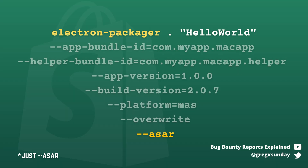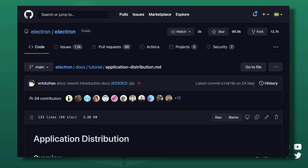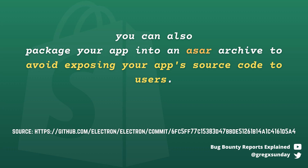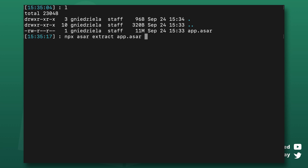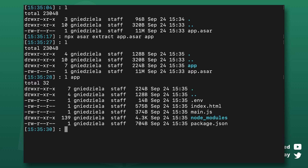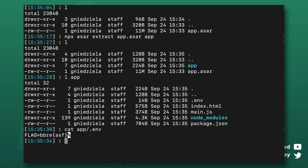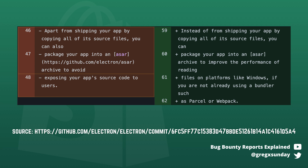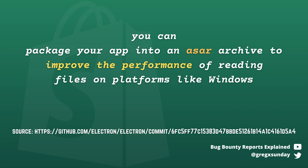To modify my application so that it also uses an asar file, I had to add the --asar=true flag to the Electron Packager command. But what's the purpose of that? I took a look into the Electron documentation. Until 2nd December 2020, the documentation said: 'You can also package your app into an asar archive to avoid exposing your app's source code to users.' Which was not true — you can easily extract the contents of the archive using the npx asar extract command. Using this file format does not protect the code in any way. The documentation was changed only two months prior to this bug. Now it says you can package your app into an asar archive to improve the performance of reading files on platforms like Windows. It's very interesting how misguiding it was.